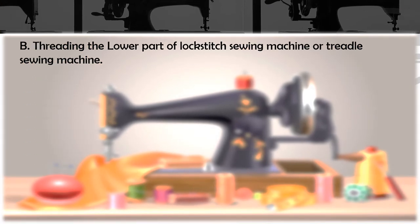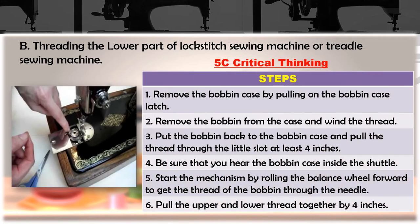Next, threading the lower part of the lock stitch or treadle sewing machine. First, remove the bobbin case by pulling on the bobbin case latch. Second, remove the bobbin from the case, wind the thread, put the bobbin back, and pull the thread through the little slot at least four inches. Be sure you hear the bobbin case click inside the shuttle. Start the mechanism by turning the balance wheel forward to bring the bobbin thread up through the needle hole, then pull upper and lower threads together by four inches.